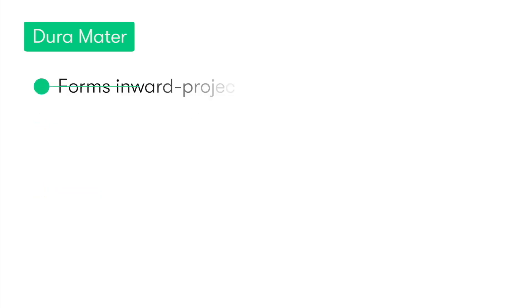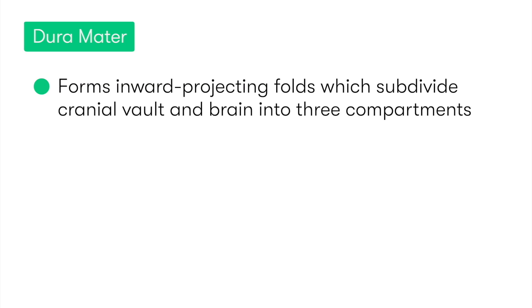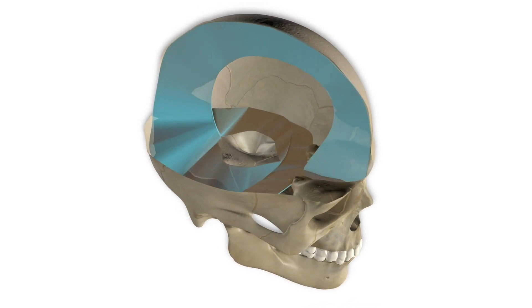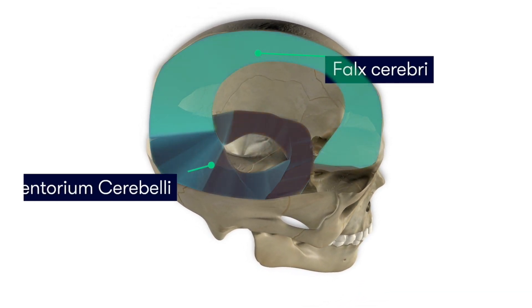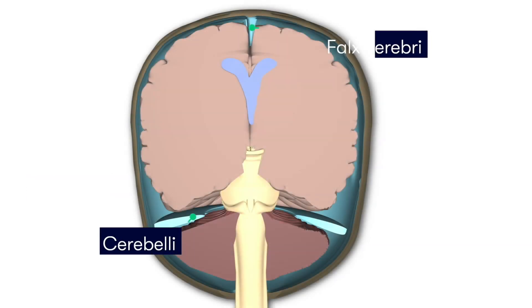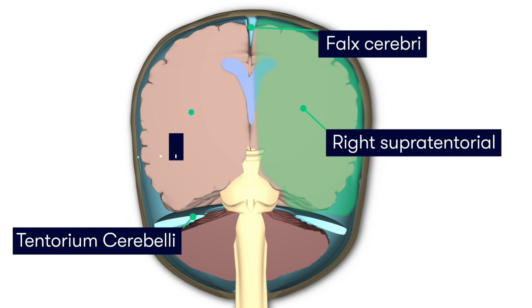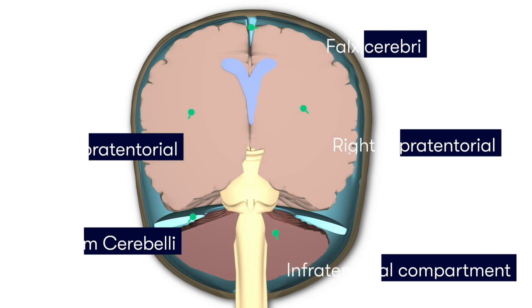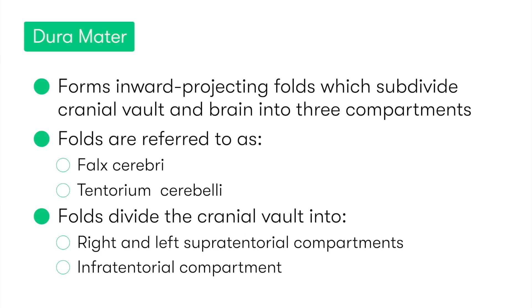Another feature of the dura mater is that at certain areas within the skull it forms thick inward projecting folds, which subdivide the cranial vault and brain into three compartments. These folds are referred to as the falx cerebri and the tentorium cerebelli, and they divide the cranial vault into the right and left supratentorial compartments and the infratentorial compartment. By compartmentalizing the skull, these dural folds help to reduce and limit the amount of movement that can take place by the brain inside the skull.